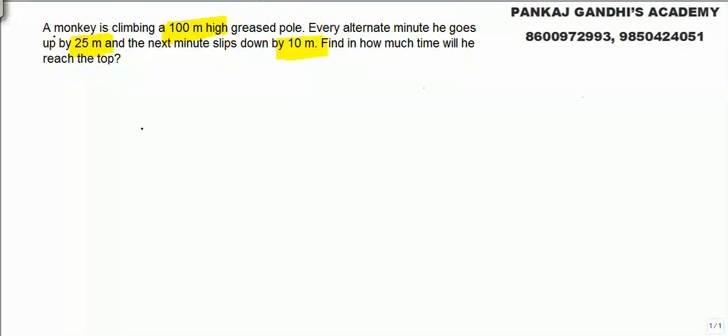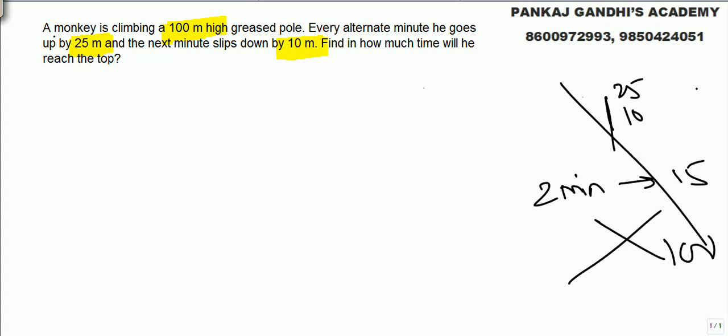Now we all know first minute it goes up 25, next minute comes down 10. So in 2 minutes it goes up 15. In how many minutes 100? All of you know this is the wrong answer because in this answer what we are doing is even after the monkey reaches top it will come down again. It will go up and again from up it will come down.